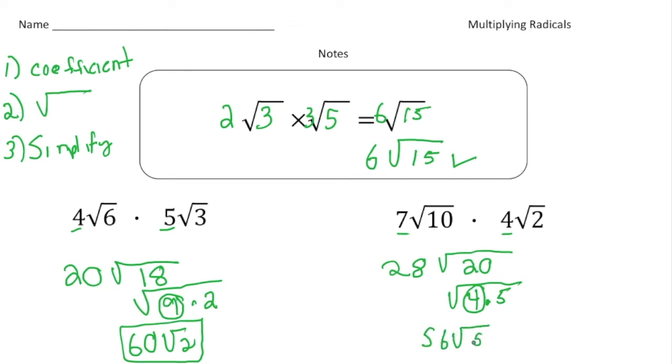And again, looking for that perfect square which is a 4. Right, so I'm going to take out the 2, and 2 times 28 is 56. And it's going to be 56 with the leftover part of 5 inside, and there's the answer. All right, so again, three steps to multiplying radicals. Step 1, multiply the coefficients. Step 2, multiply what's inside the radical signs, and then finally if you can, simplify.